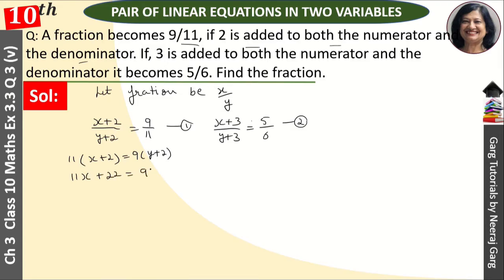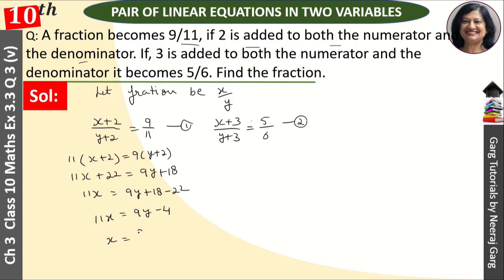And that is equal to 9y + 18. और 11x = 9y + 18 − 22, then 9y − 4. यह आया 11x, then x is equal to (9y − 4) upon 11.